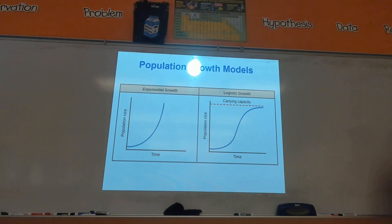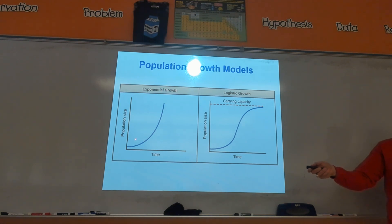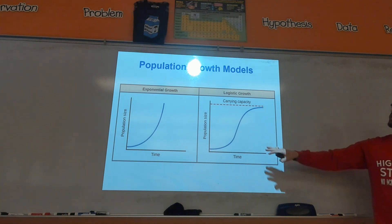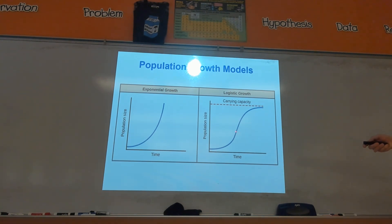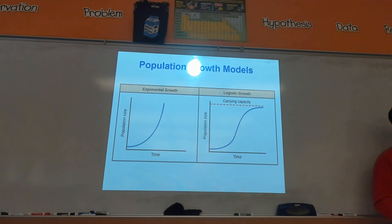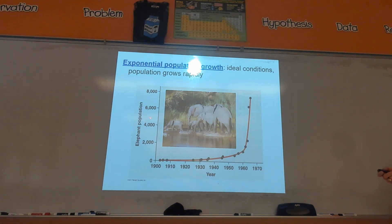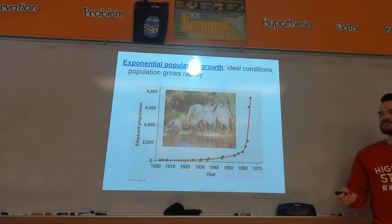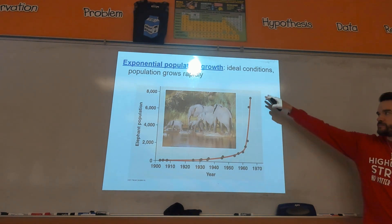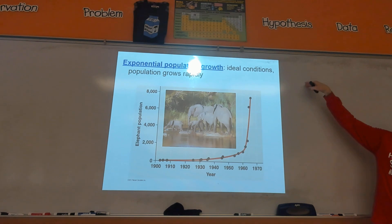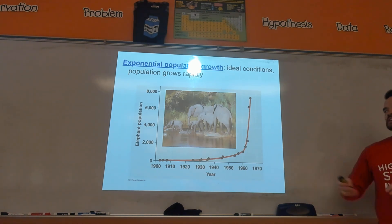Exponential growth — from math class, that should be familiar. The faster you grow, the faster you keep growing. Logistic growth initially looks like exponential growth, but the lack of resources you eventually run into causes what's called a carrying capacity. The population can't keep growing infinitely. Looking at exponential growth, elephant populations have grown exponentially, at least for a period of time. If you were to extend the graph, you would eventually see a leveling off.